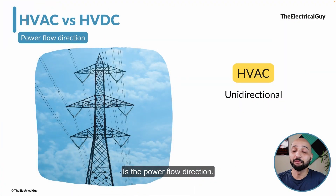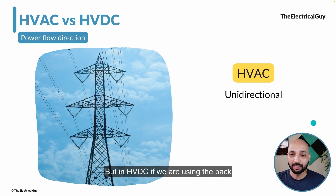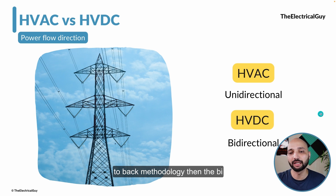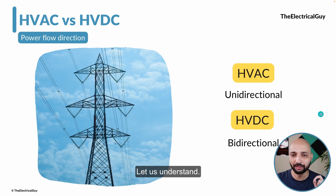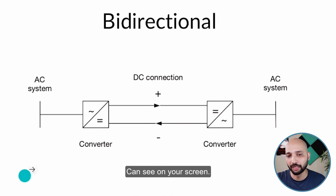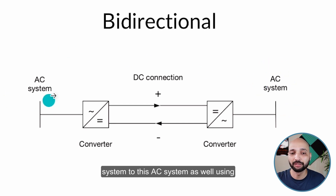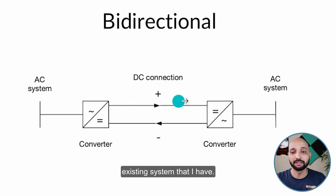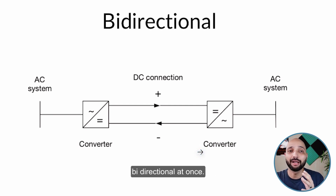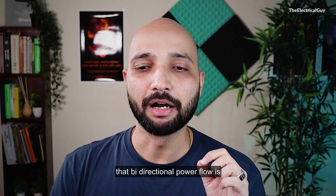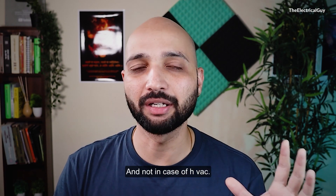The next parameter is power flow direction. In HVAC, power only flows in one direction — from source to destination. But in HVDC, if we use the back-to-back methodology, bidirectional power flow is possible. As shown on screen, a back-to-back HVDC system allows power to be transmitted from one AC system to another in either direction using the existing infrastructure. This bidirectional power flow is possible only in HVDC and not in HVAC.